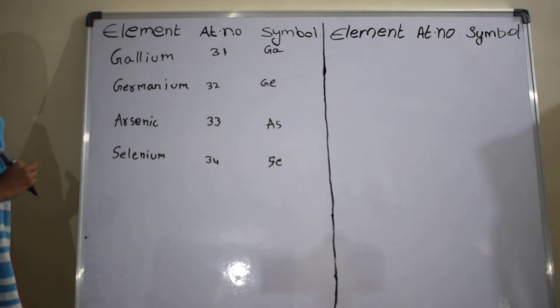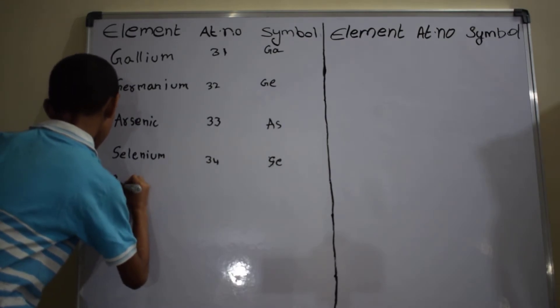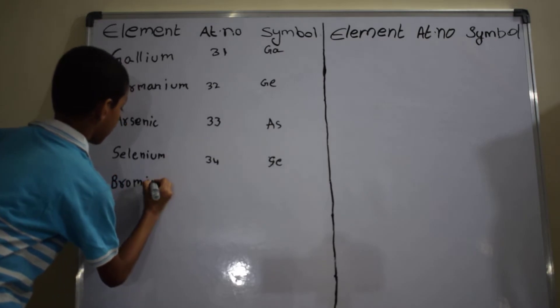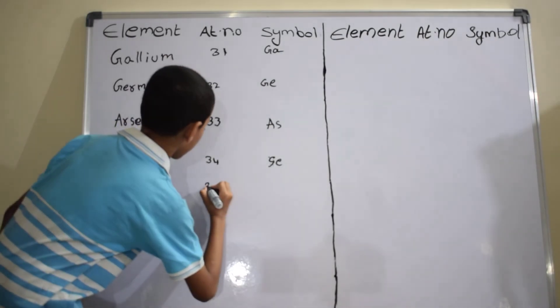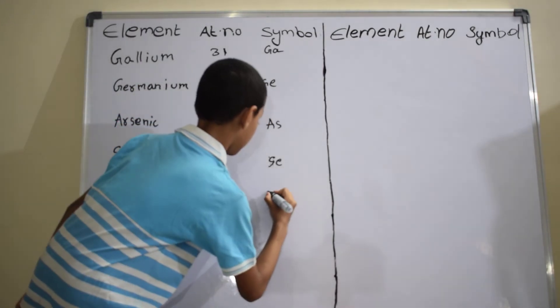Next element is bromine, B-R-O-M-I-N-E. Atomic number is 35. Symbol is Br.